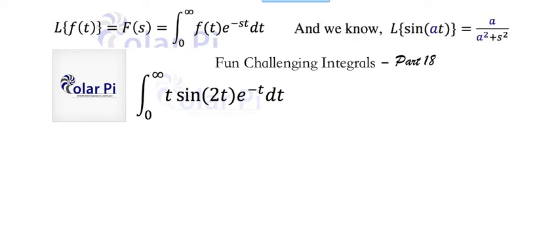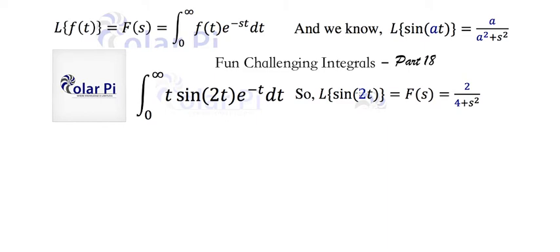By a video I've already made — which I'll link below — we know that the Laplace transform of sine of a times t equals a over s squared plus a squared. So the Laplace transform of sine 2t is going to be 2 over s squared plus 4, using a equals 2. This is capital F of s, the Laplace transform for the function sine of 2t.